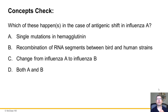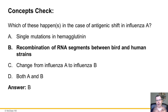Concept check: which of these happens in the case of antigenic shift in influenza A? Does it cause single mutations in hemagglutinin, recombination of RNA segments between bird and human strains, change influenza A to B, or both A and B? The answer is B — recombination of RNA segments between bird and human strains, creating a brand new strain. That's what we worry about most with antigenic shift.